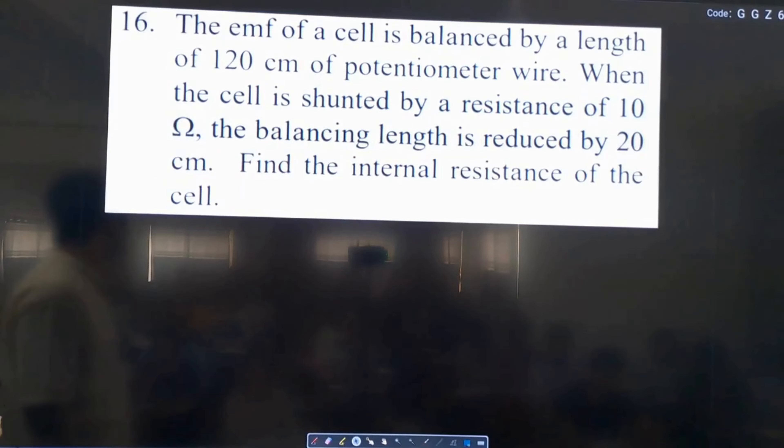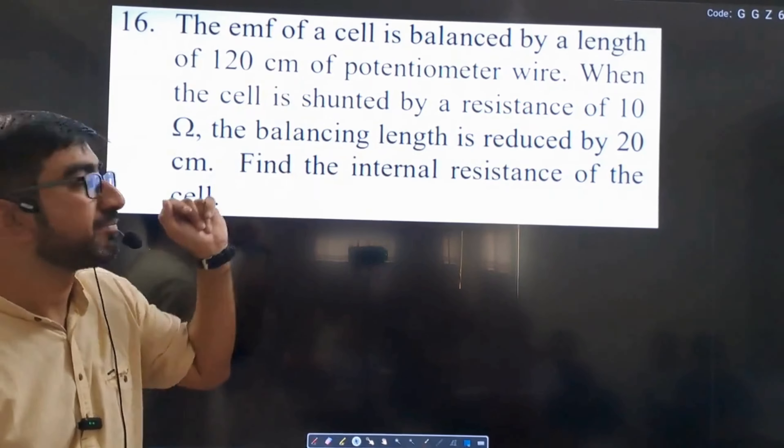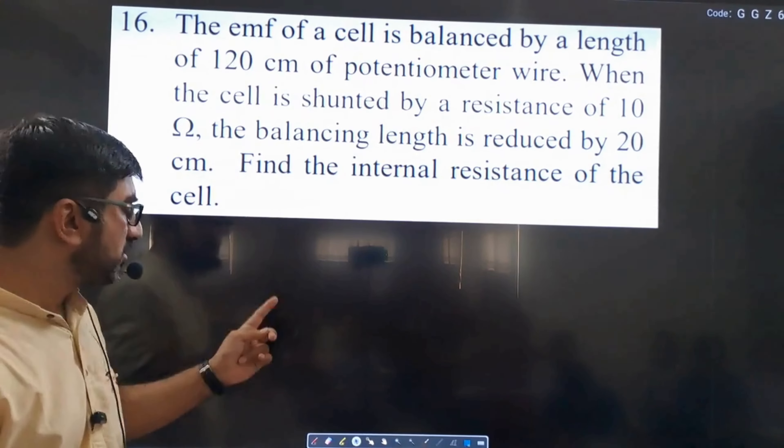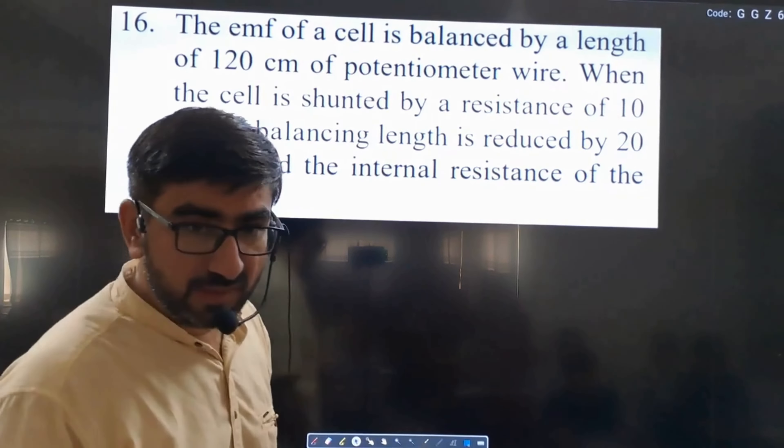Question 7. It says that a cell whose EMF is balanced against a length of 120 cm. Now, the new balancing length is 120 minus 20, that is 100. Find the internal resistance of the cell.